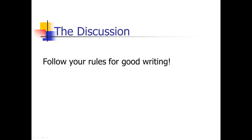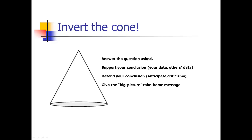Follow all the good rules for writing that we've been talking about in this class. In the discussion section, you kind of have that cone from the introduction section, but you're inverting it. Where you left off in the introduction was with the specific question you were trying to answer, the specific hypothesis you were trying to test. So you start the discussion section by answering that question. 'We found that' is the most common way to start the discussion section.